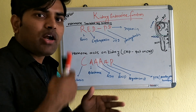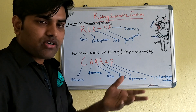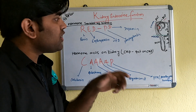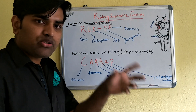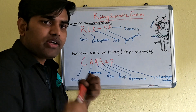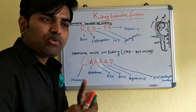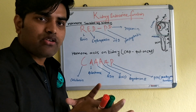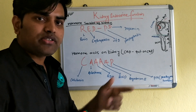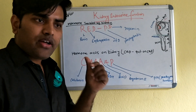Renin converts angiotensinogen into angiotensin 1. Angiotensin 1 is converted to angiotensin 2 by angiotensin-converting enzyme (ACE). Angiotensin 2 constricts blood vessels, raising blood pressure. In the proximal convoluted tubule it aids sodium absorption and hydrogen excretion, promoting bicarbonate absorption. In the distal convoluted tubule, aldosterone receptors mediate sodium absorption and potassium/hydrogen excretion.